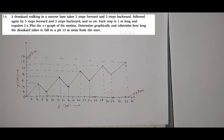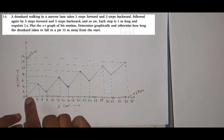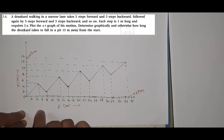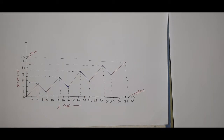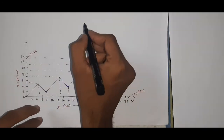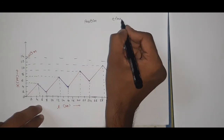Plot the graph x versus t of his motion. Determine graphically and otherwise how long the drunkard takes to fall into a pit 13 meters away from the start. His motion continues: 5 steps forward, then backward. I have already drawn the graph here. The red color shows forward direction and the blue color shows backward direction. So let's understand when he starts — position and time.